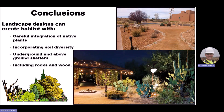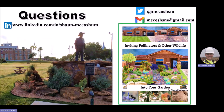In conclusion, I hope that you all have enjoyed this talk and that you were able to walk away with the ideas that landscape designs can create habitat — it only takes careful integration of native plants, incorporating soil diversity within our overall designs, providing underground and above-ground shelters, and including rocks and wood in a way that animals can still utilize them that are also aesthetically pleasing to the viewer. Please feel free to reach out to me on LinkedIn under Sean McCosham, on Twitter under McCosh SM, or at gmail at McCosh SM at gmail.com. If any of this is truly interesting and you want to do some further reading, I have published a book on creating habitats and the ways that animals and plants interact. Thank you all again and I really appreciate you coming to this talk.